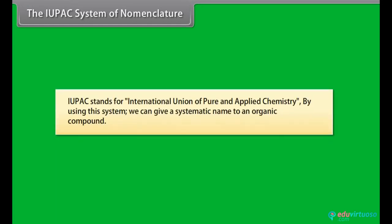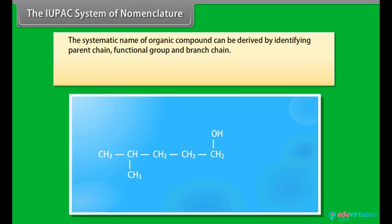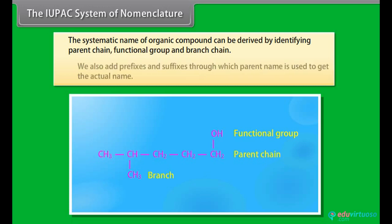The IUPAC system of nomenclature: IUPAC stands for International Union of Pure and Applied Chemistry. By using this system, we can give a systematic name to an organic compound. The systematic name of an organic compound can be derived by identifying the parent chain, functional group, and branch chain. We also add prefixes and suffixes to the parent name.